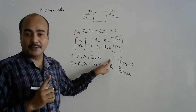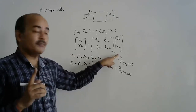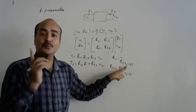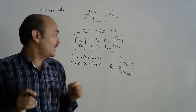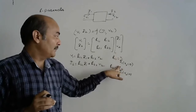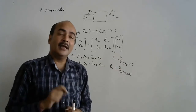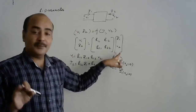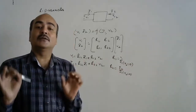H11 is the ratio of input voltage to input current, so it is the input port impedance with output short circuit. The difference between Z11 and H11 is that Z11 is V1/I1 with I2 = 0 — output open circuit — while H11 has output short circuit. Therefore H11 is not equal to Z11.